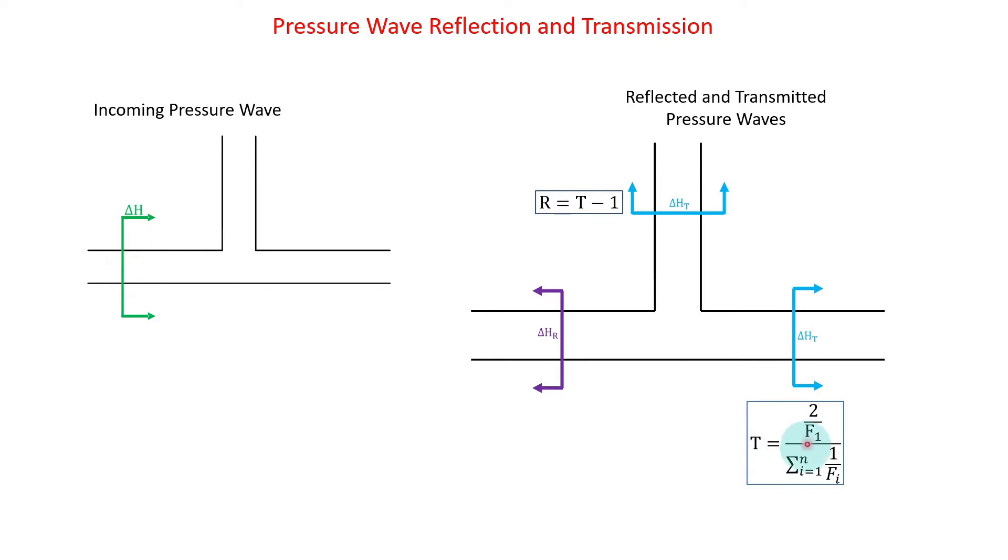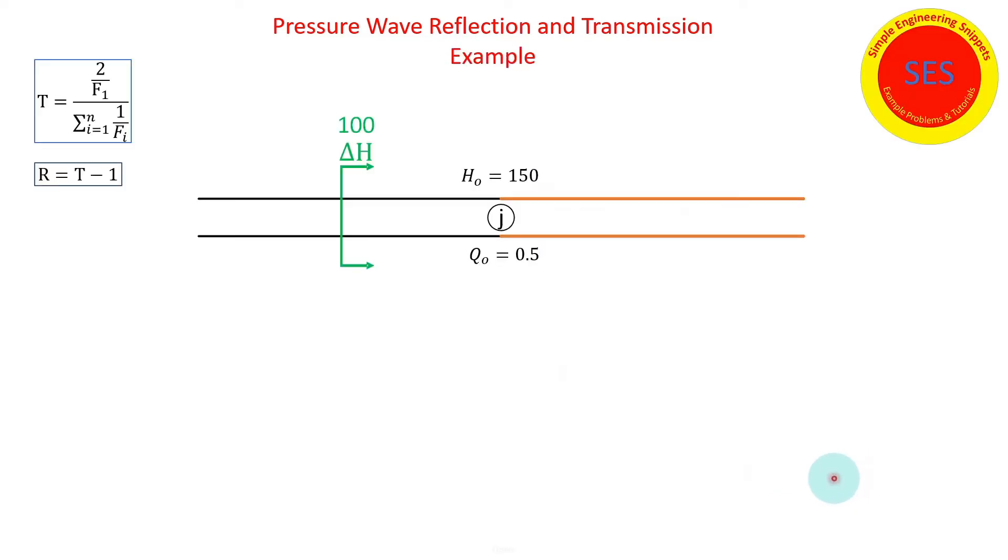Pipe one being the pipe with the incident wave, and that is divided by the sum of i equals one to n where n is the number of pipes. In the shown situation n would be equal to three of one over the elastic factor.